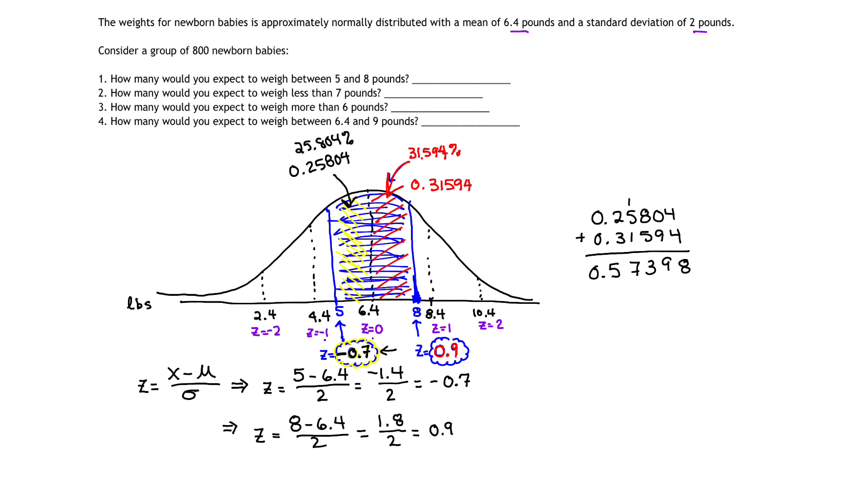And I'm just going to label, this is the probability that the number of babies that weigh between 5 and 8 pounds, this is the probability that those babies will lie between 5 pounds and 8 pounds. The probability is 0.57398 or 57.398%.